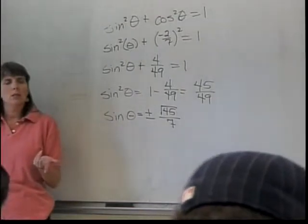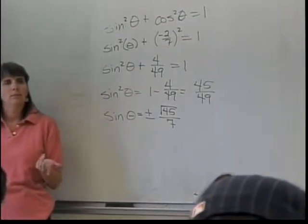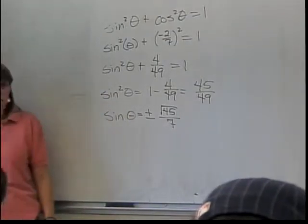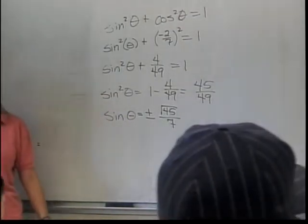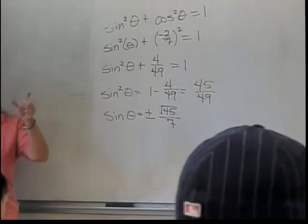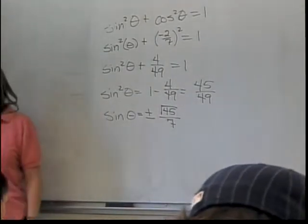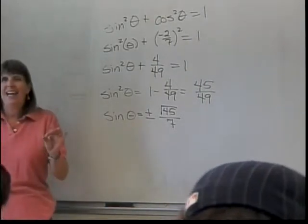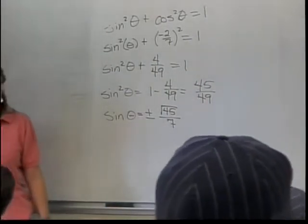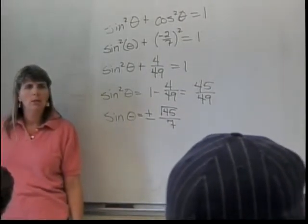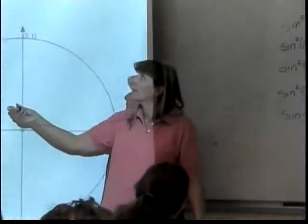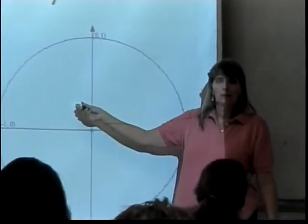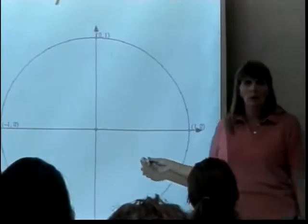So where is the tangent less than 0? Which quadrants? In 2 and in 4 because that's where the sine and the cosine have different positive and negative signs. Which one am I in? Am I in quadrant 2 or quadrant 4 and how do I know? The tangent is negative. Right, so that means I'm either in 2 or in 4.